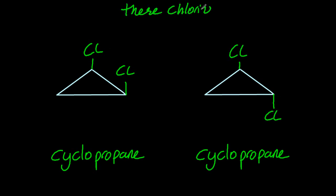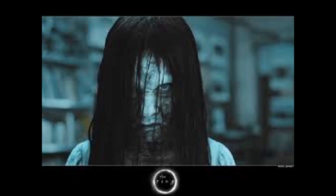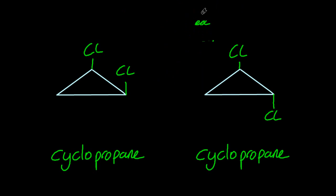So these chlorines, they're locked into position by the ring. So on the left-hand side, those chlorines are locked vertically upwards. And on the right-hand side, one up and one down.